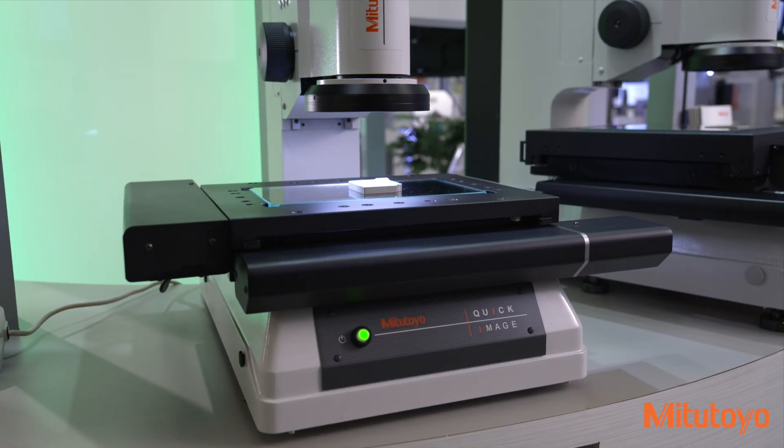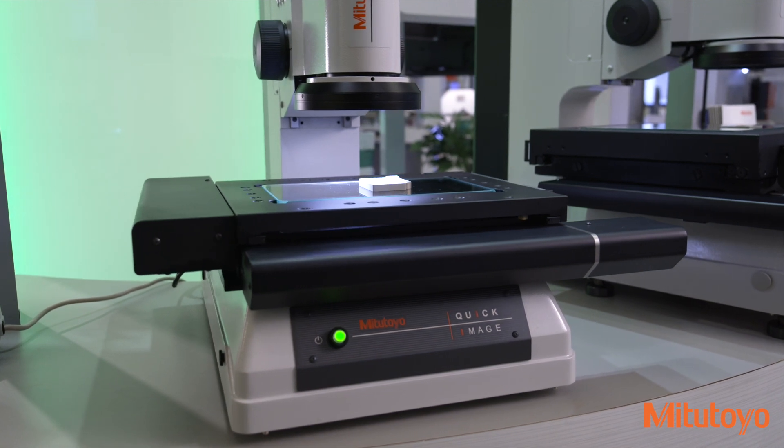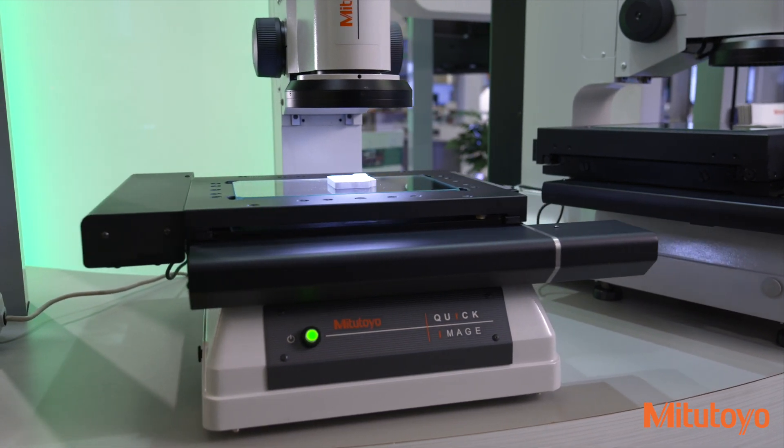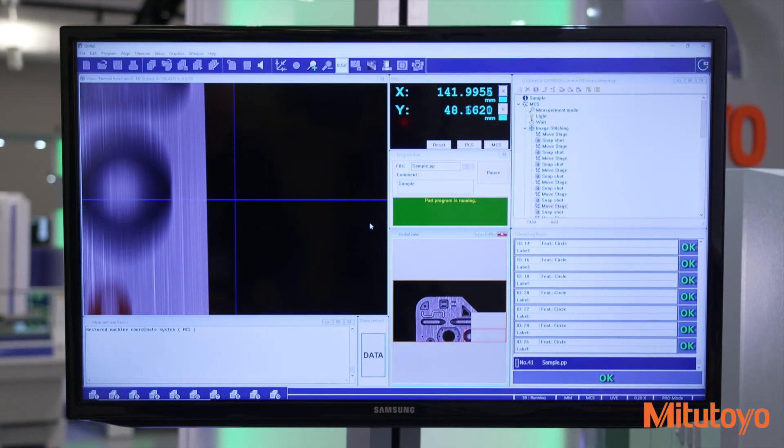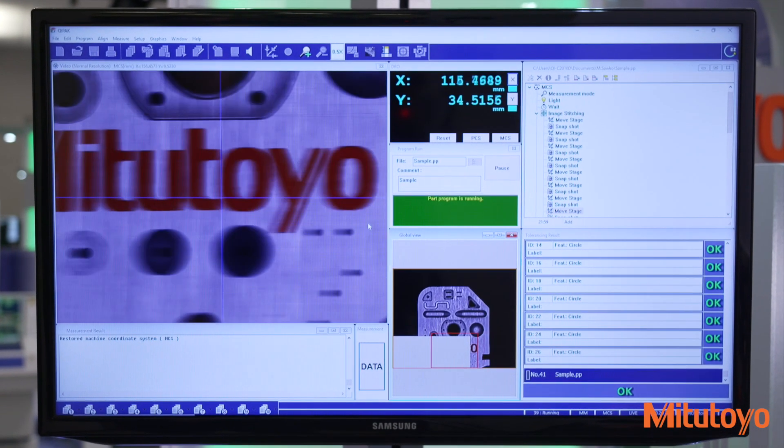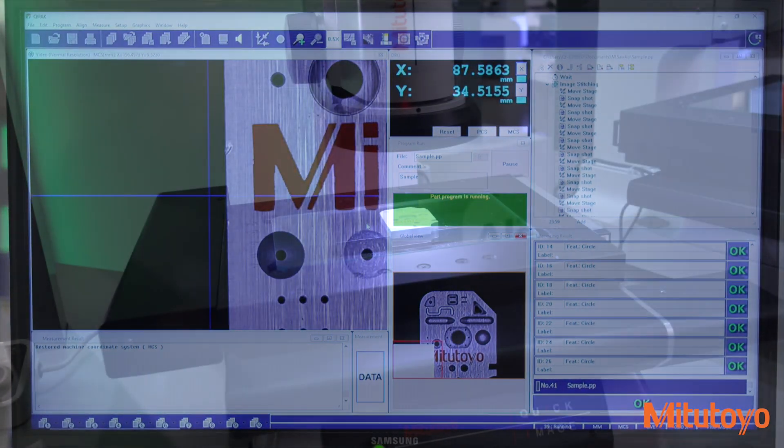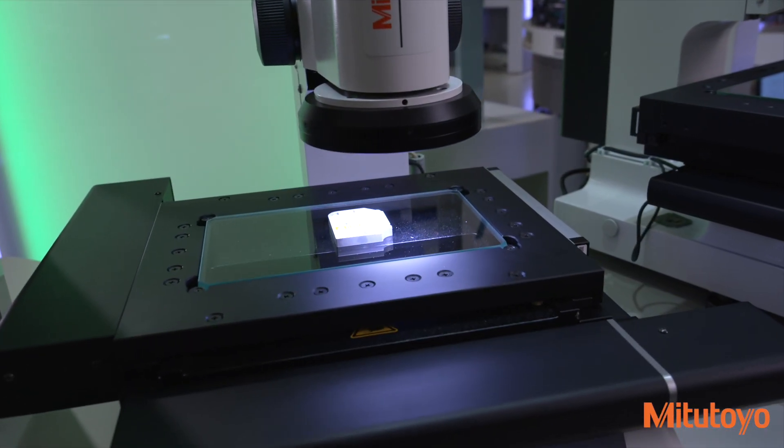Taking high-accuracy measurements is simple with the quick image system. Orientations of parts are automatically detected. Multiple measurements can be executed with a single click anywhere within the screen.